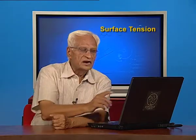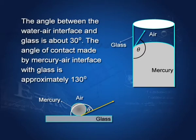The angle of contact between water and glass is about 30 degrees. If you take mercury, the surface is convex and the tangent points outward, and therefore the angle of contact measured through the liquid is about 130 degrees. You can also see this with a mercury drop on a glass plate — this angle is the angle of contact.